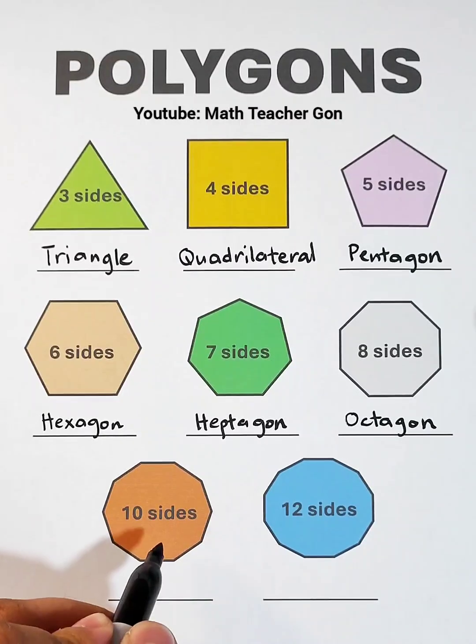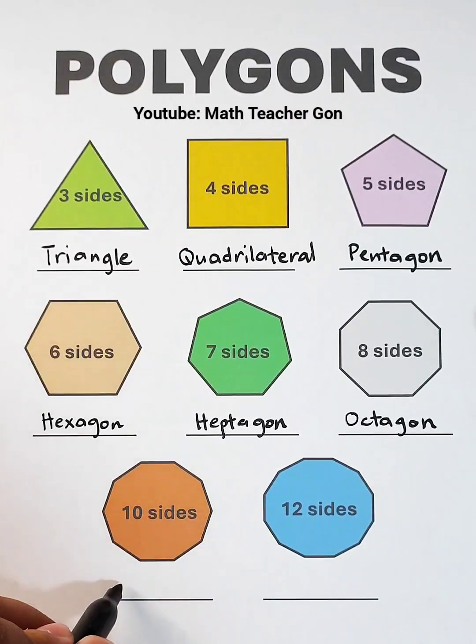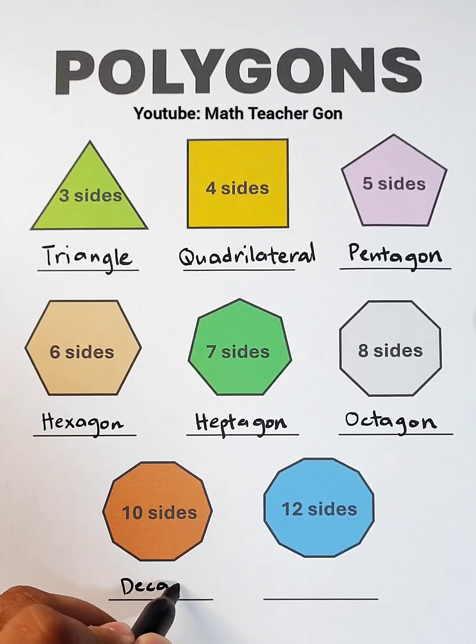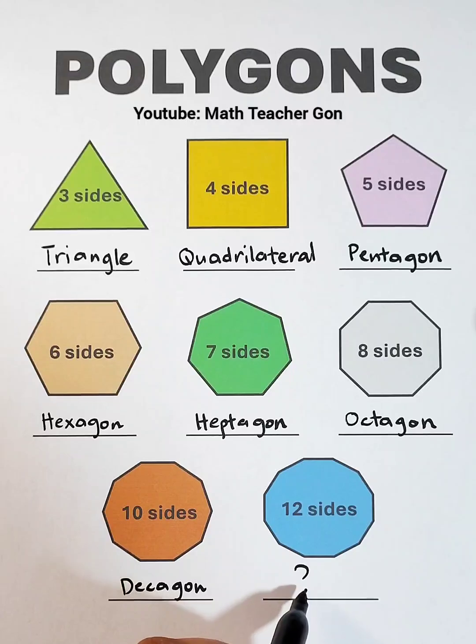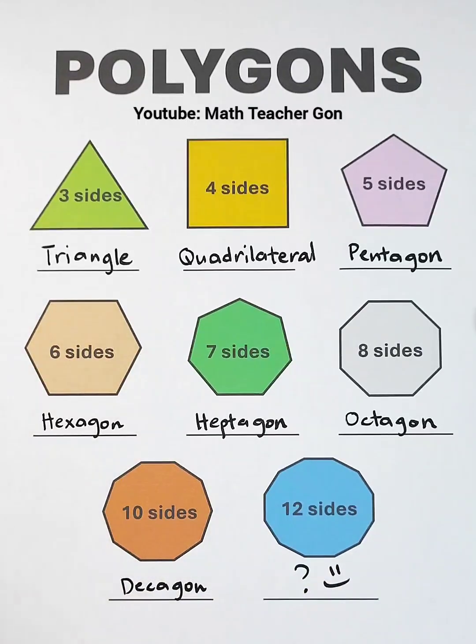This one, the polygon with ten sides, is the polygon named as decagon. Now, it's your turn to name the polygon with twelve sides. Follow for more.